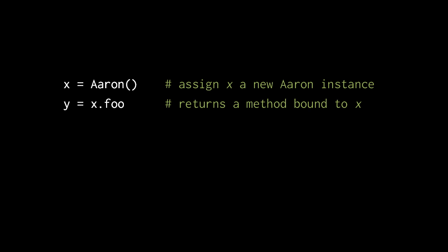This is a special behavior only for functions. In the class Aaron, the methods are expressed as just attributes which are functions, but then when we look them up via instances of that class what we get back are method objects.